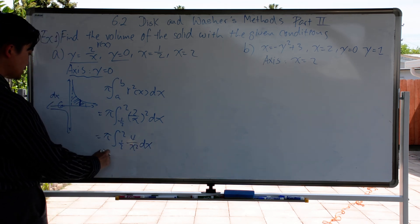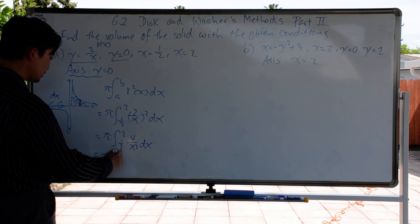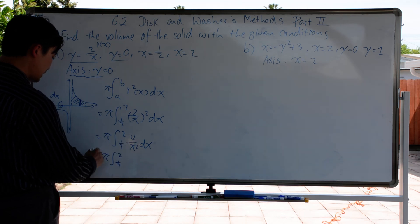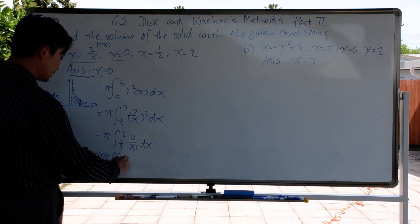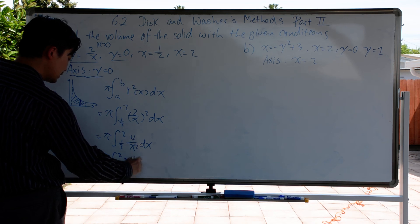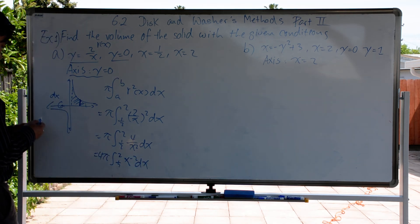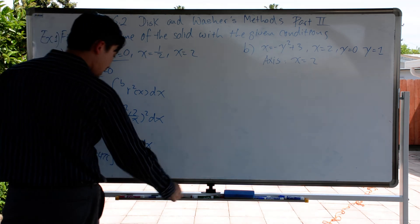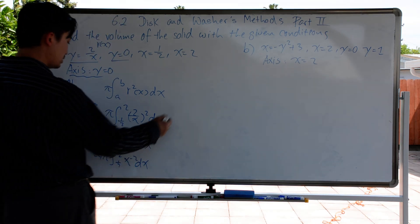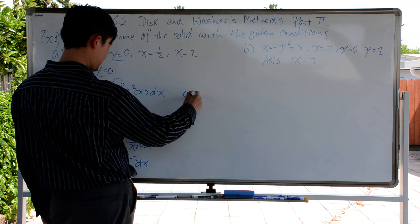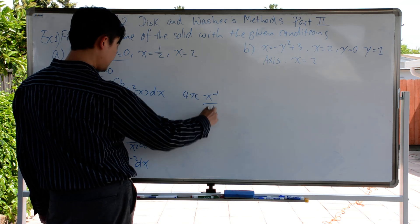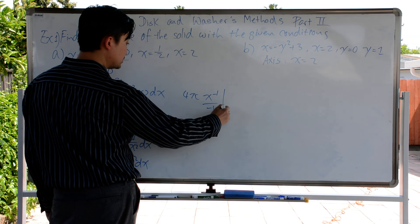This can be written as pi times the integral from 1/2 to 2 of 4 times x to the power of negative 2, dx. We can take 4 out as a coefficient. Integrating by using the power rule, we get x to the power of negative 1 divided by negative 1, bounded from 1/2 to 2.